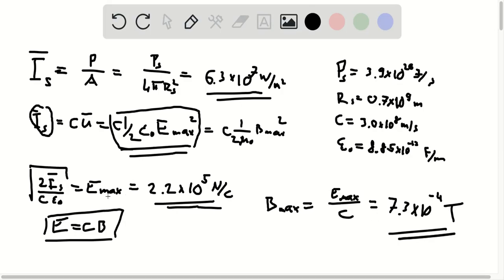So near the surface of the sun, which we had assumed to be a spherical surface, the amplitude of the electric field is 2.2 times 10 to the 5 newtons per coulomb, and the amplitude of the magnetic field is 7.3 times 10 to the minus 4 tesla.